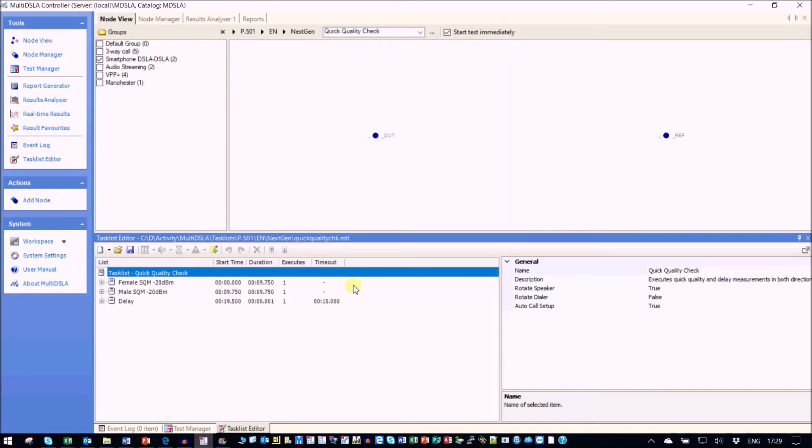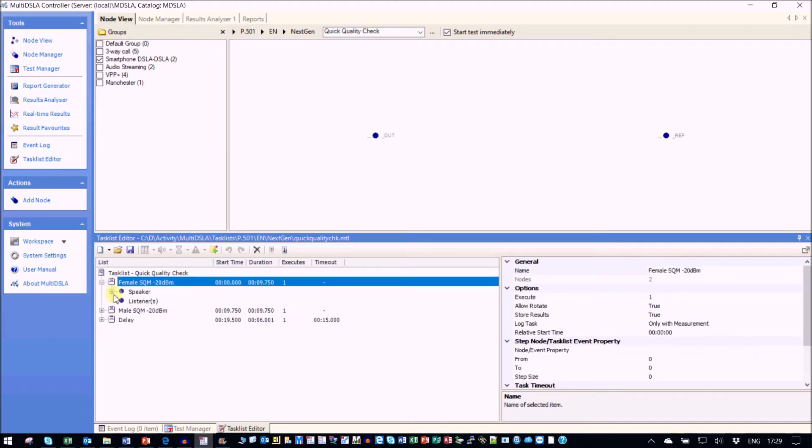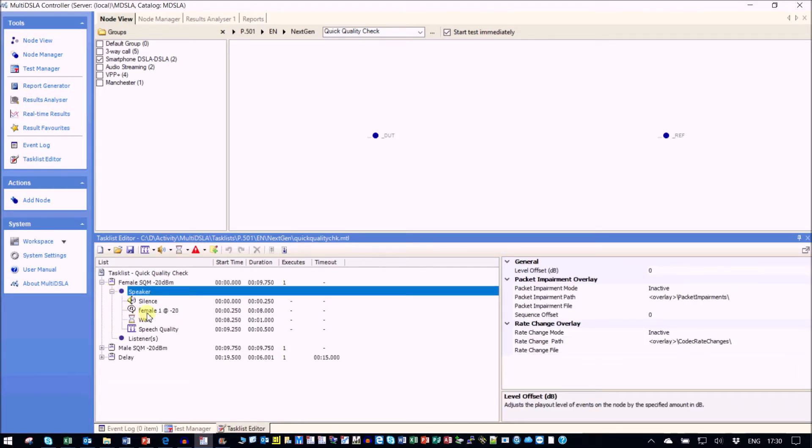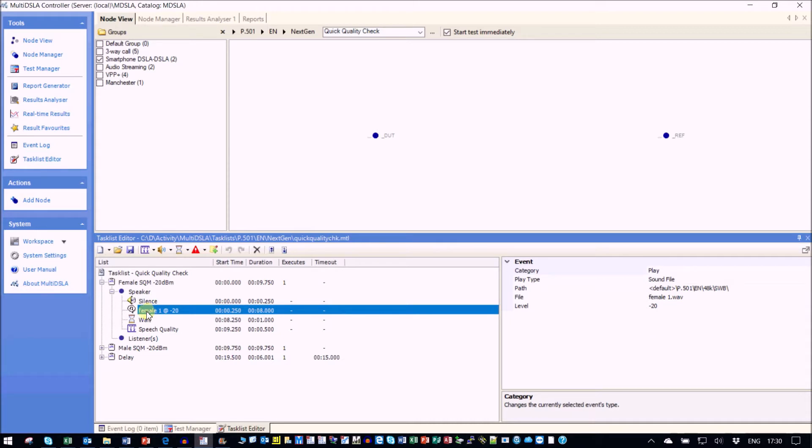You can see that the quick quality check now opens up in the task list editor window with the same name. As we expand the task list which defines the test, we can see in here the female_1.wav file is mentioned as the source or the reference material. When we look at the folder it's in, it's from the P.501 English 48k super wideband folder.